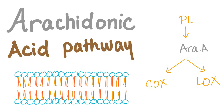Let's continue our series about bleeding and coagulation disorders. In the previous two videos we talked about the platelet and its structure. Today, let's talk about the arachidonic acid, one of the most important pro-inflammatory substances in your body.